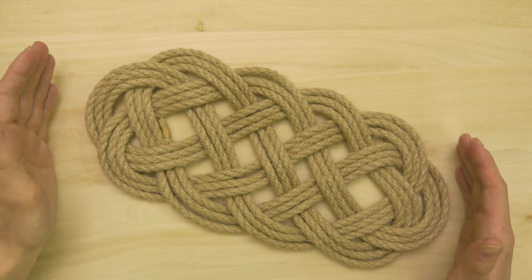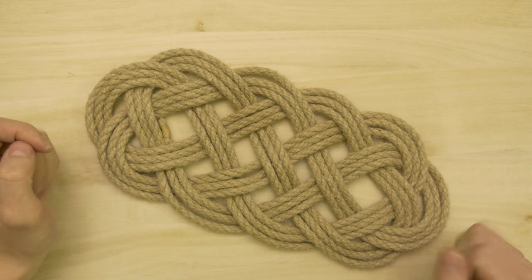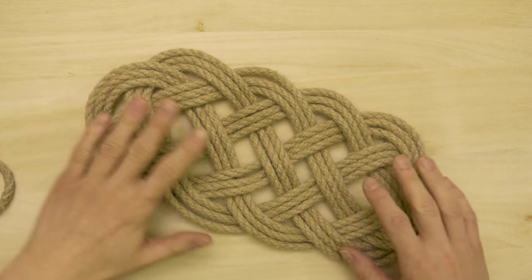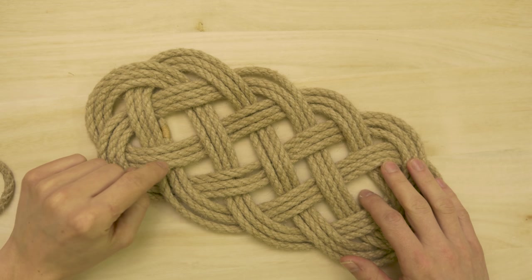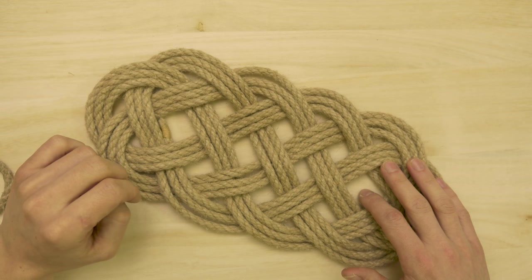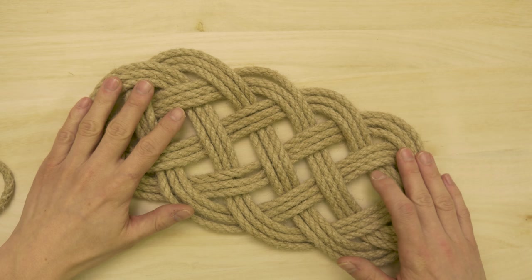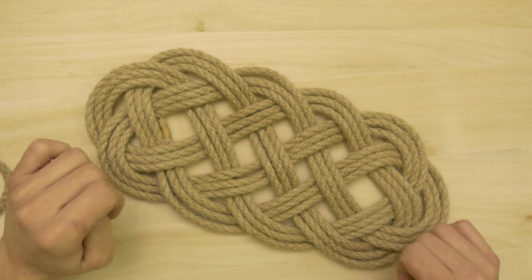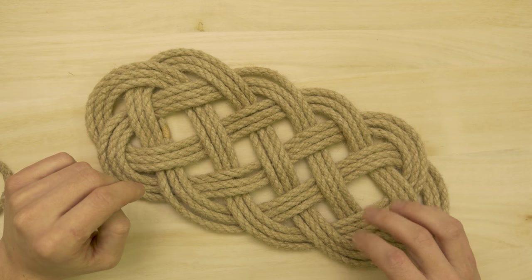To tie this mat I used a quarter inch hemp rope and I used about 24 feet of it. So this will give you enough rope for a three-pass version. If you want more passes you're going to need a bit more rope. Now before we can actually start tying our mat we need to take care of our rope. So let's take a look at how to do that.